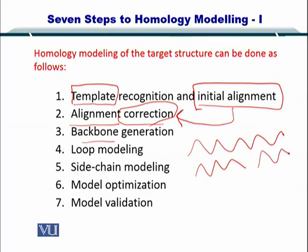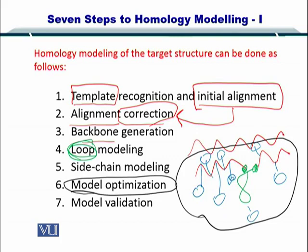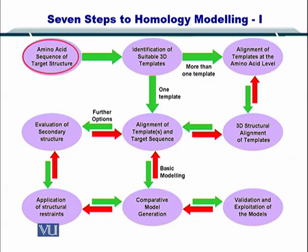After generating the backbone, you need to look at the various loops that are going to join the backbone. This is followed by adding side chains — since every protein is formed of amino acids and every amino acid has a side chain. You then follow it up by optimizing the model, that is, optimizing the structure of the protein. Once optimized, all you need to do is validate it against the known protein structure.